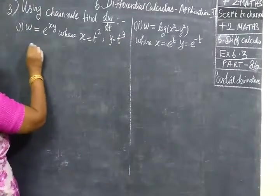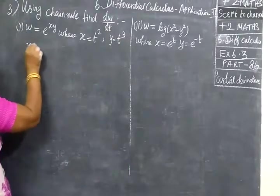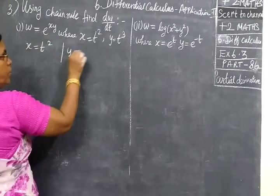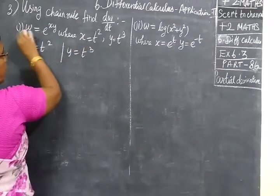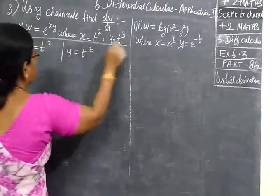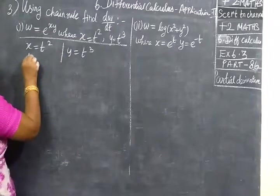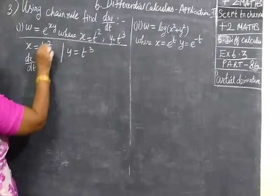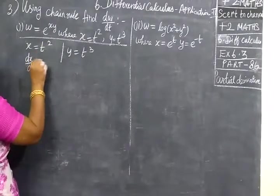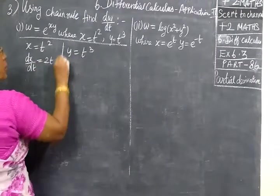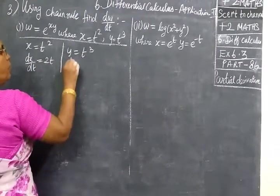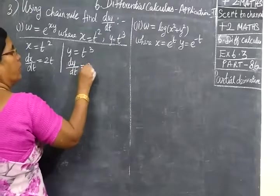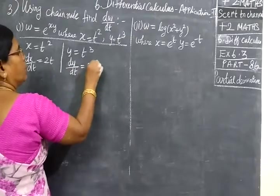Now, x here is t square, then y equal to t cube. So, find dx by dt. Differentiation of x with respect to t equals 2t, then dy by dt equal to 3t square.